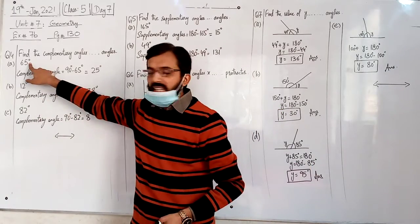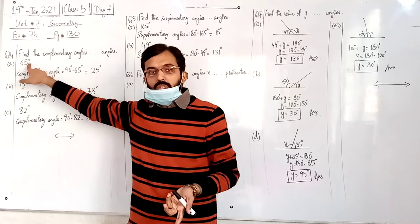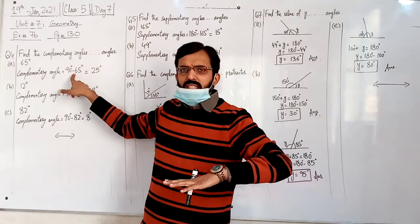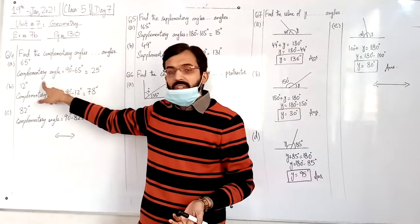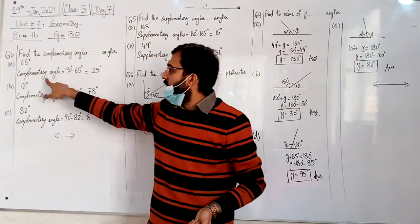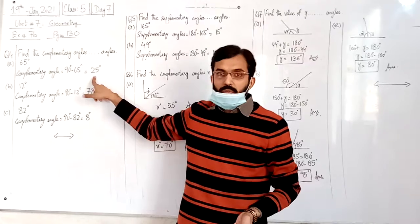If one angle is 65 degrees, then the other angle is 90 degrees minus this angle. Then the other angle is the complementary angle. So the complementary angle is 25 degrees.